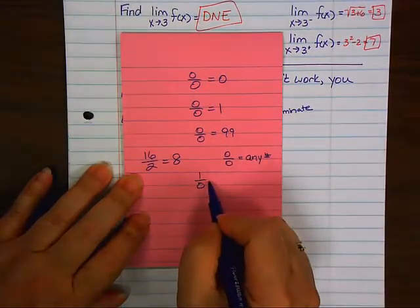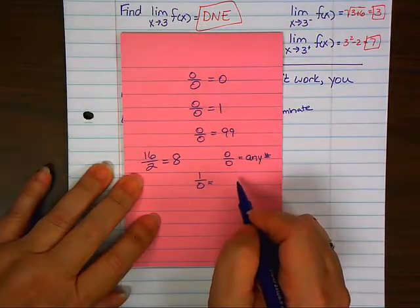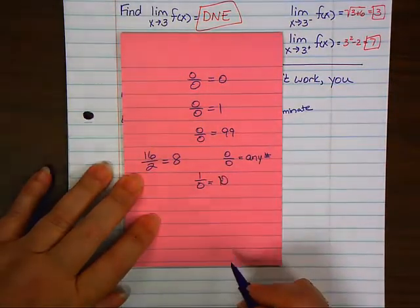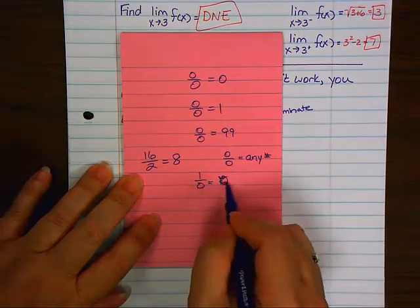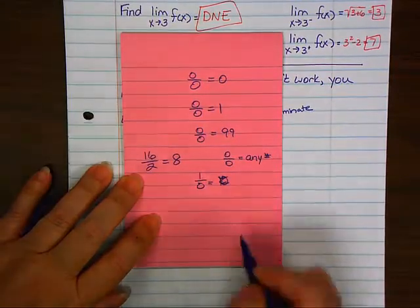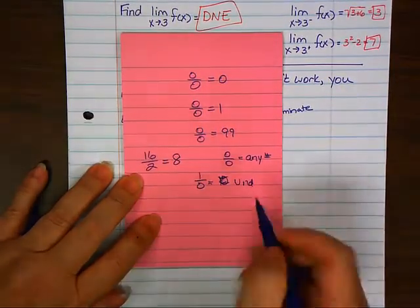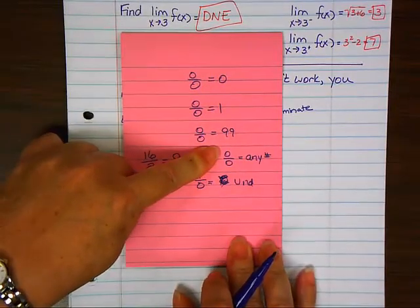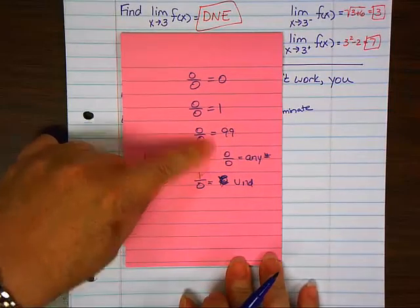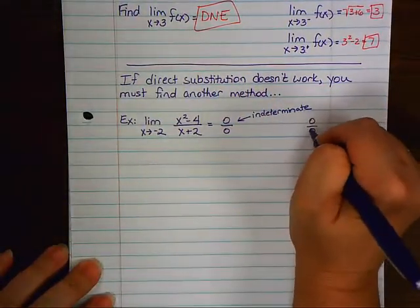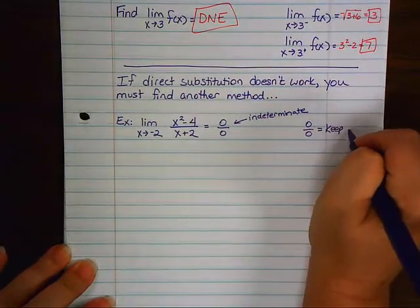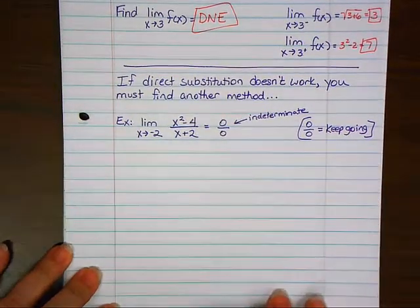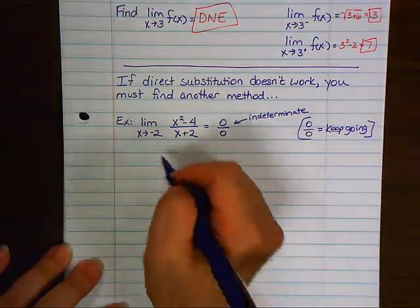Now, 1 over 0. A little freshman might think that this is 1. But does 1 times 0 equal 1? No. Or they might think it's 0. But does 0 times 0 equal 1? No. Does anything times 0 equal 1? No. That's why it's undefined. Because nothing times 0 will ever equal 1. That's why it's undefined. Now, the question is, since this can be anything, what is it? There's a way. I said 0 over 0 is something, but I don't know what it is yet. So as far as we are concerned with limits, I want you to write this down: 0 over 0 equals keep going. When you see a limit problem and you see 0 over 0, you need to keep going.